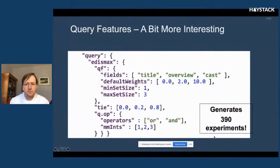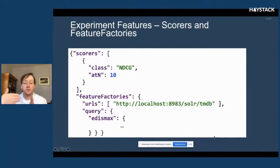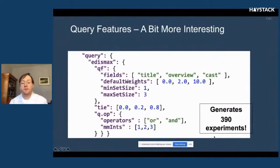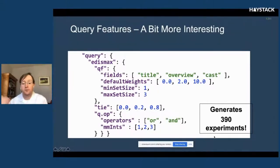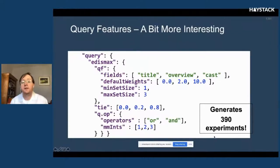This is what feature factories look like — instead of experiments, you have feature factories. You can specify different URLs to send queries to different servers with different configurations, specify ranges for what fields you want to use for an edismax query, what weight ranges you want, how many fields, different tie variable values, and query operator values. Just this combination, when you do all the permutations, generates 390 experiments.